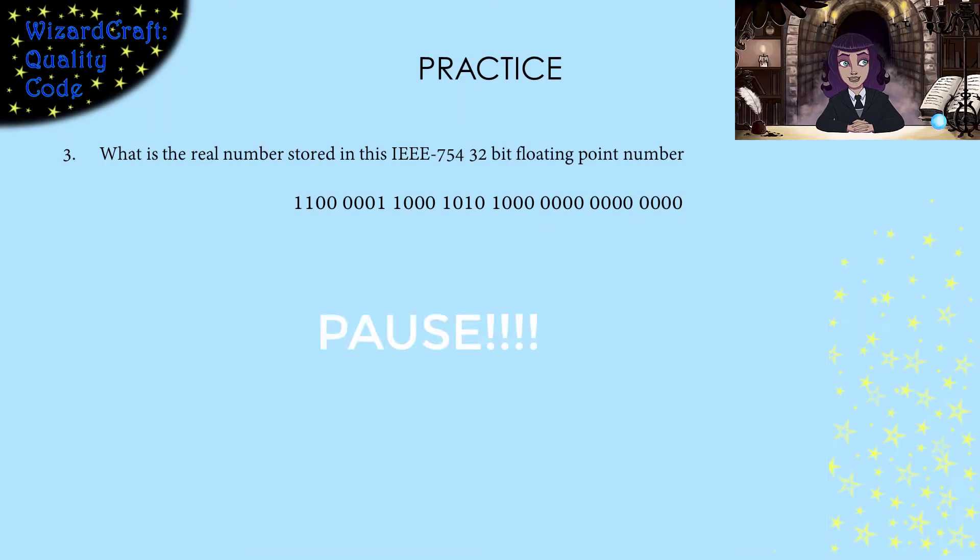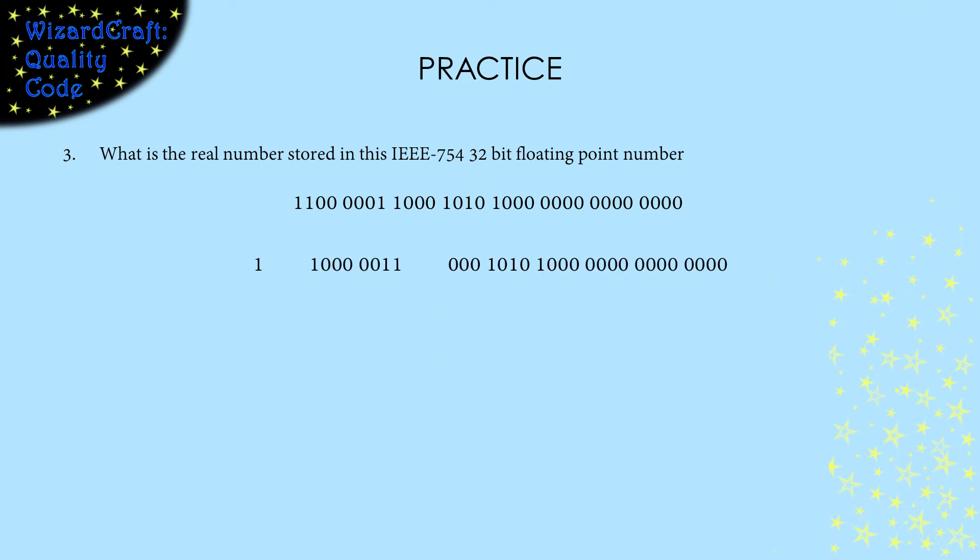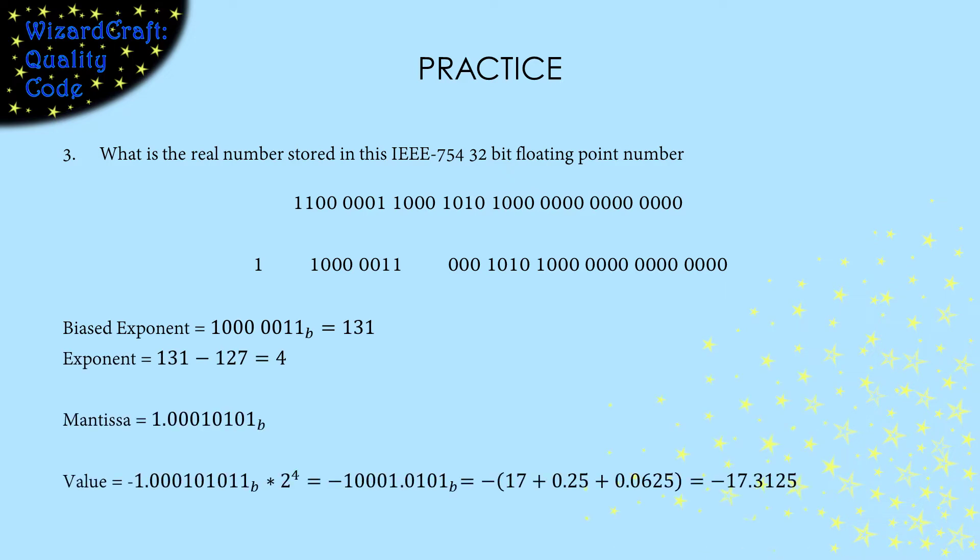Now, practice going the other way. Split it up into three parts. Unbias the exponent. Unnormalize the mantissa. Now, all we have to do is move the decimal point the amount the exponents tell us to, and convert it to decimal.